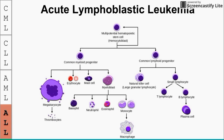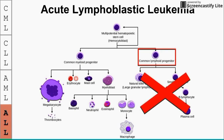ALL originates from the common lymphoid progenitor on the differentiation branch, halting production of mature lymphoid blood cells. That concludes this quick summary of the four main leukemias — CML, CLL, AML, and ALL.